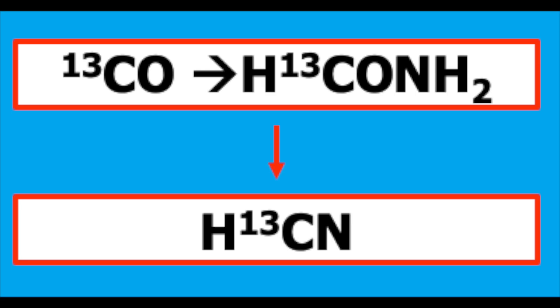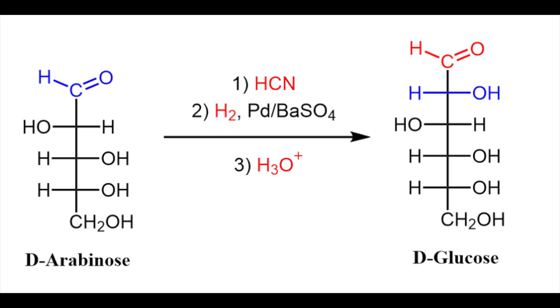When the cyanide is reacted with arabinose — a five-carbon sugar — it adds to it, and you can make the six-carbon glucose. And that's what I have here. As you can imagine, given the elaborate process I just described, you understand why it costs that much.